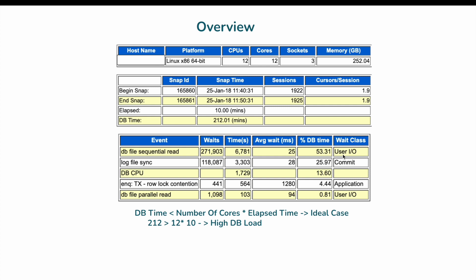As mentioned in my previous case study, the top two desirable wait events are CPU and IO, and it is always better to have db CPU as the top one rather than db file sequential read. In this case, the database is spending more time on disk reads rather than reads from the buffer — db CPU is only 13 percent consumed. The db file sequential read is showing an average wait time of 25 milliseconds, which is significantly higher.